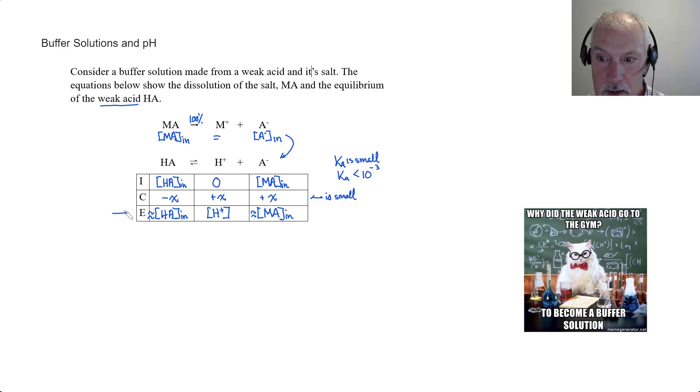So at equilibrium, and using this line, we can say our acid dissociation constant is the concentration of the hydrogen ion times the concentration of our salt, divided by the concentration of our acid.